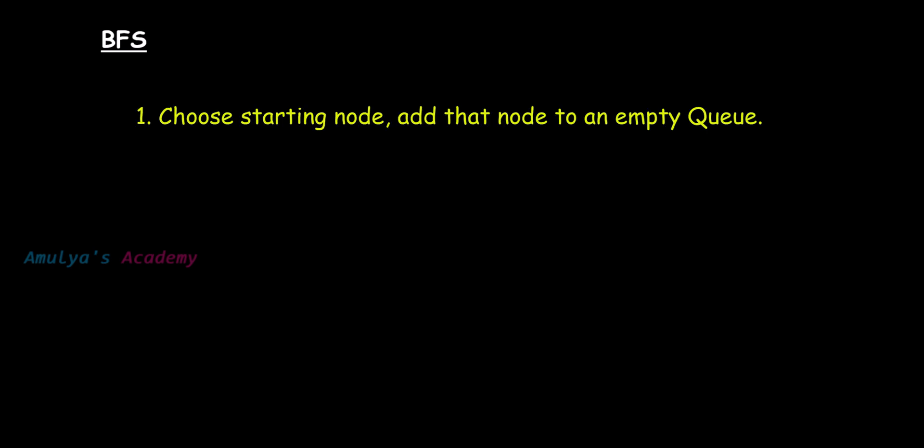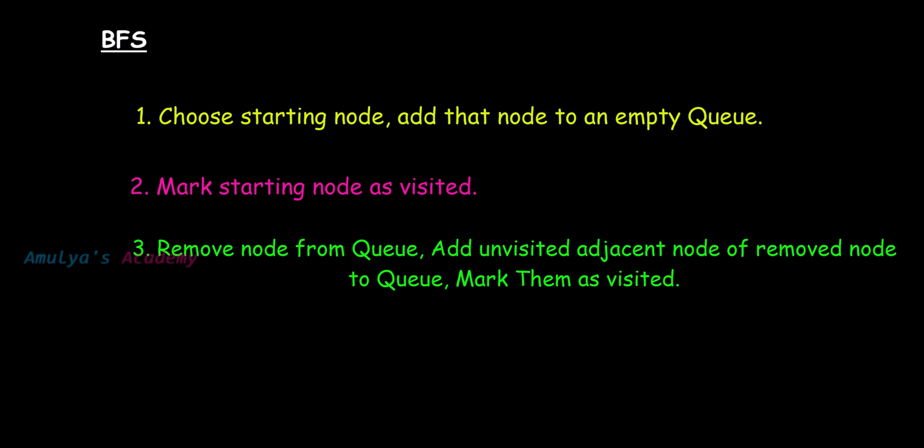Let's see how BFS algorithm works and how it uses the queue data structure. The first step is to choose the starting node and add it to an empty queue. The second step is to mark the starting node as visited. The third step is to remove the node from the queue, take it as the current node, then add all unvisited adjacent nodes of that current node to the queue and mark them as visited. The last step is to repeat step 3 until the queue is empty.